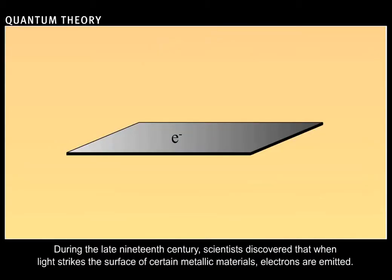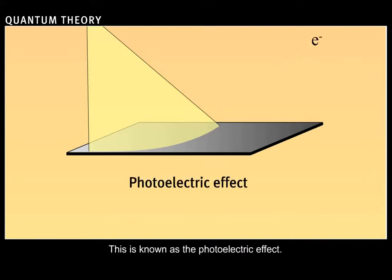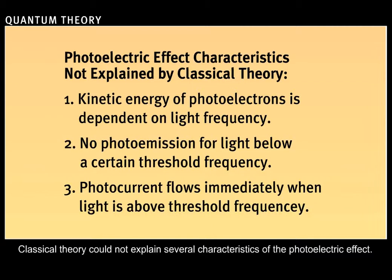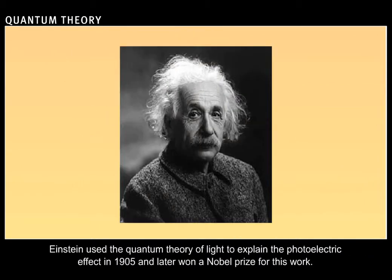During the late 19th century, scientists discovered that when light strikes the surface of certain metallic materials, electrons are emitted. This is known as the photoelectric effect. Classical theory could not explain several characteristics of the photoelectric effect. Einstein used the quantum theory of light to explain the photoelectric effect in 1905, and later won a Nobel Prize for this work.